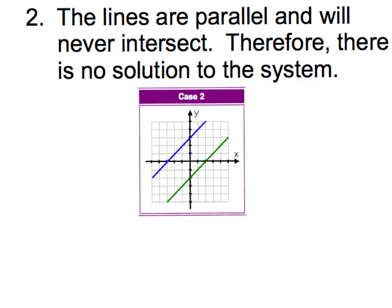The second thing that can happen is that when we graph the lines, they turn out to be parallel to each other. We know that parallel lines will never intersect, and therefore there is no solution to the system.